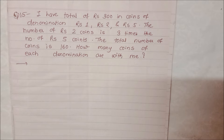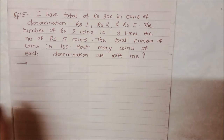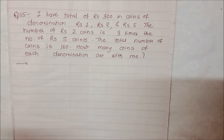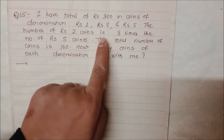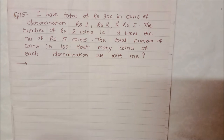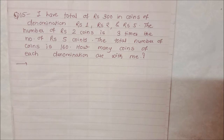Some 5 rupee coins, some 2 rupee coins, some 1 rupee coins. The number of 2 rupee coins is not given directly — some conditions are given according to it. The number of 2 rupee coins is 3 times the number of 5 rupee coins. And the total number of coins is 160. You have to find how many coins of each denomination there are.